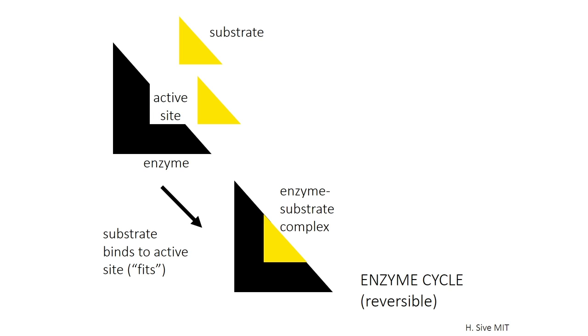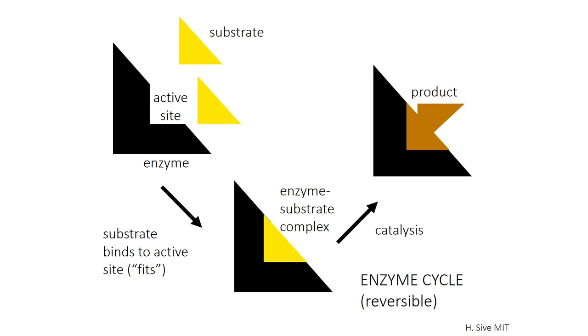Once the substrate is inside the enzyme, bound to the enzyme, then various changes happen that push the substrate over the activation energy barrier and allow the product to form. Once the product's formed, it's released from the enzyme, and the enzyme is free to be a catalyst again for that chemical reaction.